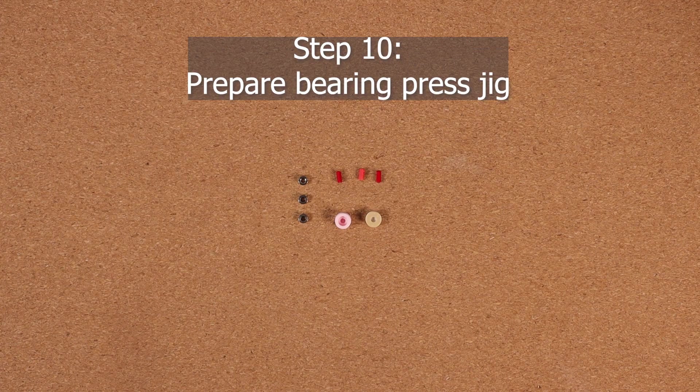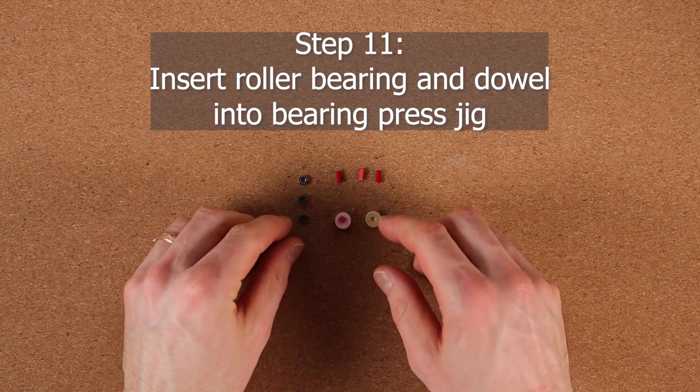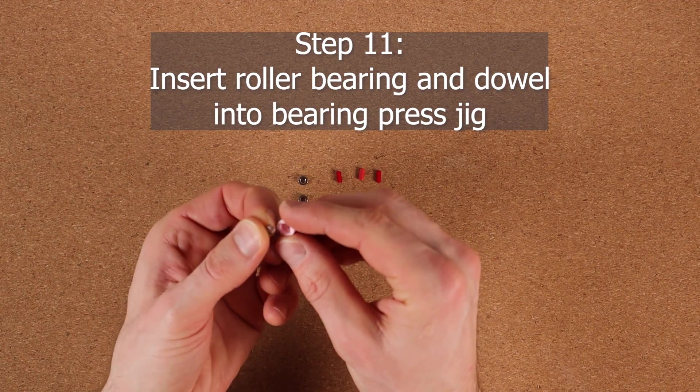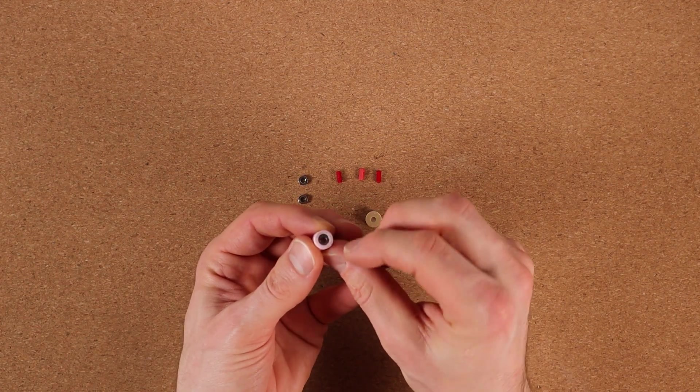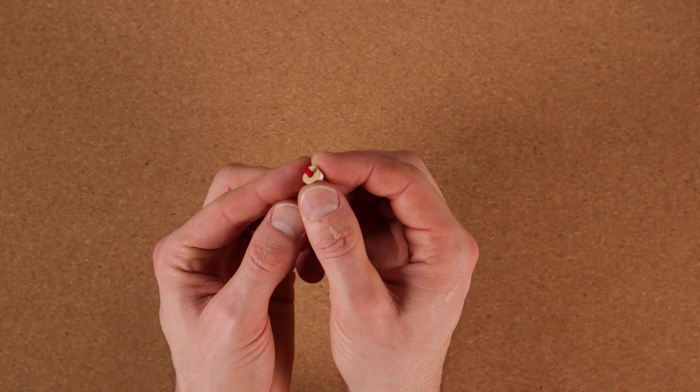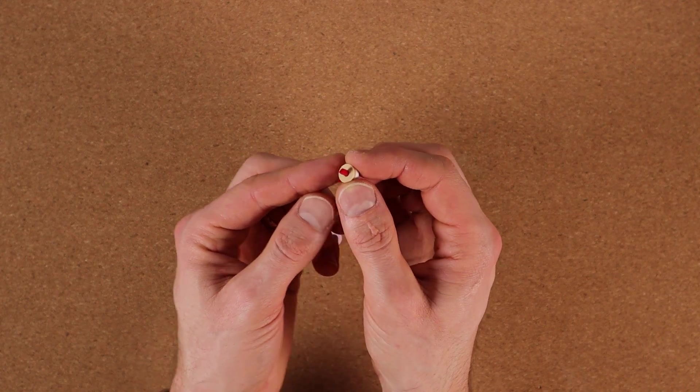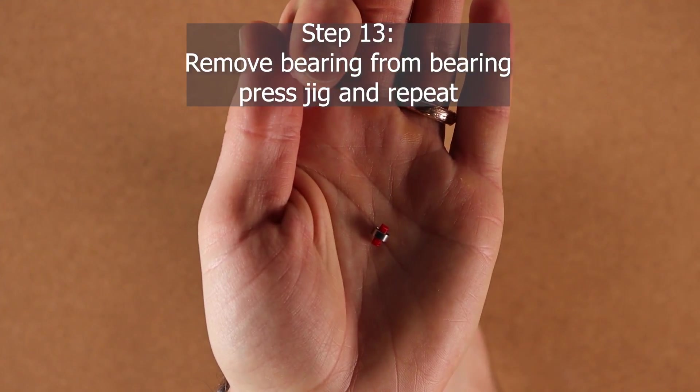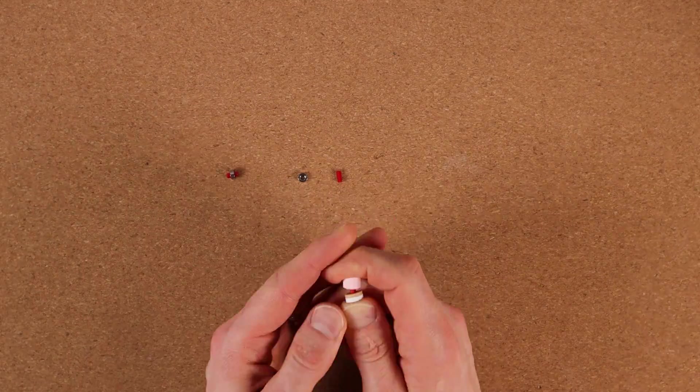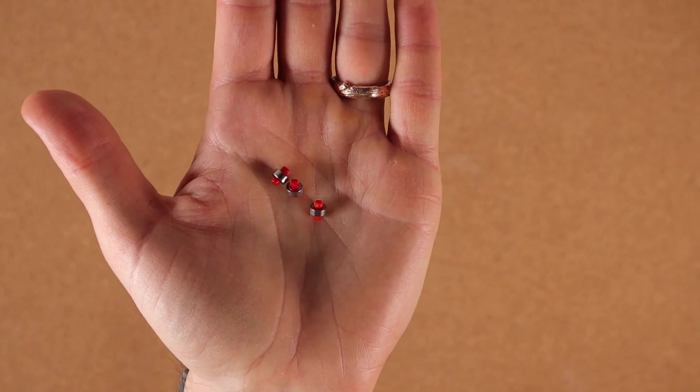Step 10, prepare the bearing press jig. So you insert one bearing into the larger part just like that and one dowel into the smaller part. Then you push the two together. So that's what one of them should look like. Repeat the process for the other two. And there's all three of them completed.